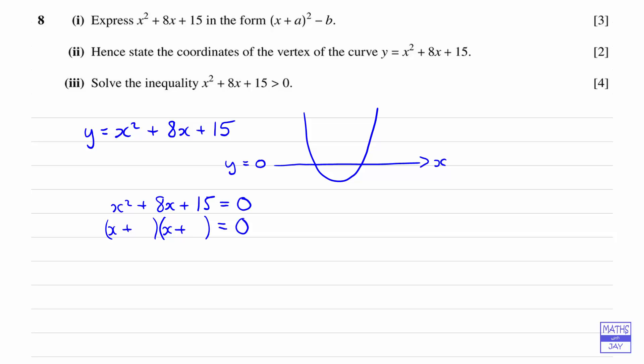So we're looking for two numbers that multiply to 15, and they add up to 8. So it must be 3 and 5. So we've got x plus 3 times x plus 5 is equal to zero. So what we can say is that x is equal to minus 3 and x is equal to minus 5.